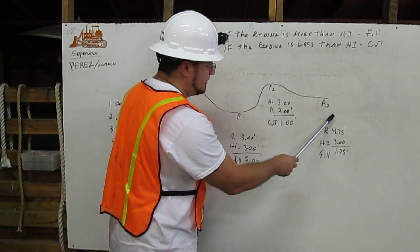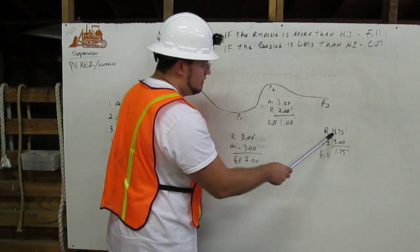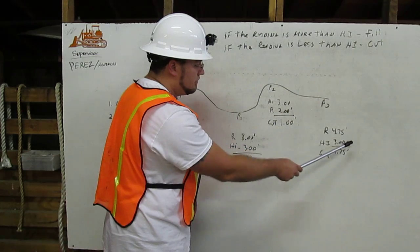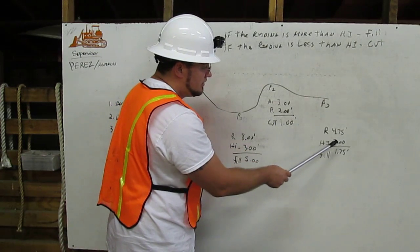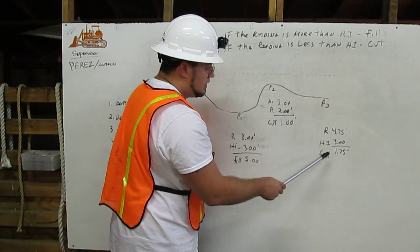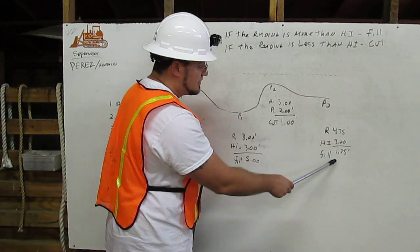And for point three, we have a reading of 4.75 feet, a height of 3.00 feet. We're going to subtract 3 feet from 4.75 feet. The answer is 1.75 feet. It is a fill.